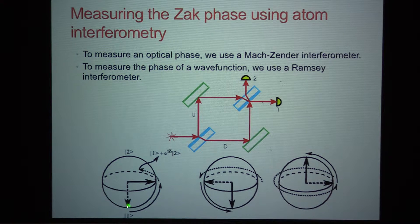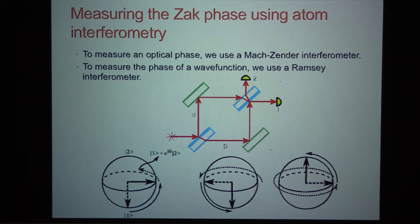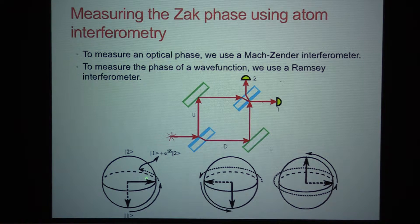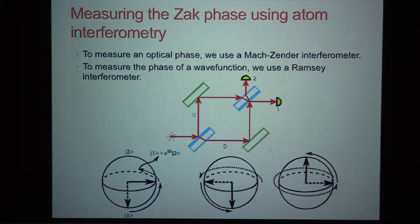You start with the atoms in a single spin state — that's like coming in with a laser beam. You create a superposition of two quantum states, call them one and two. In the experiments, those are two hyperfine states. You can create a superposition by shining a microwave pulse on them. If it's a pi-over-two pulse, it brings the spin into the equatorial plane. Then you have a superposition which will evolve and can pick up a phase. This phase difference can depend on the Zeeman energies between the two states, or on the Zak phase if they're moving in a periodic potential.